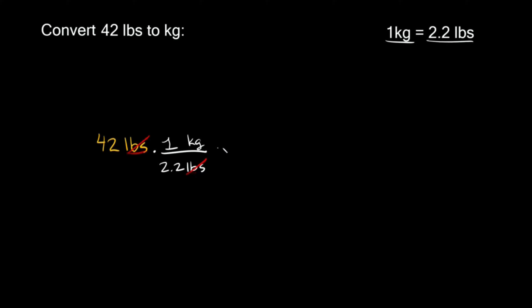So then the next thing we're gonna do is multiply all the stuff on top together. So 42 times 1 is just 42. And then we still have our units right here, kilograms, and then we're gonna divide that by everything that's on the bottom. So we just have 2.2.